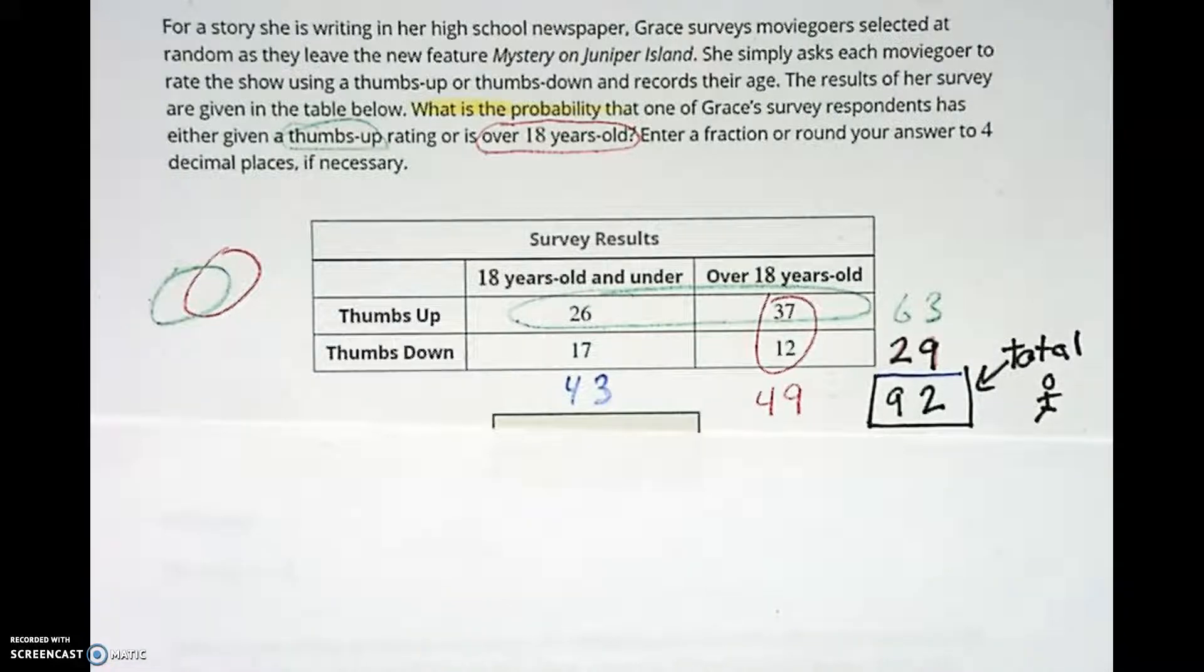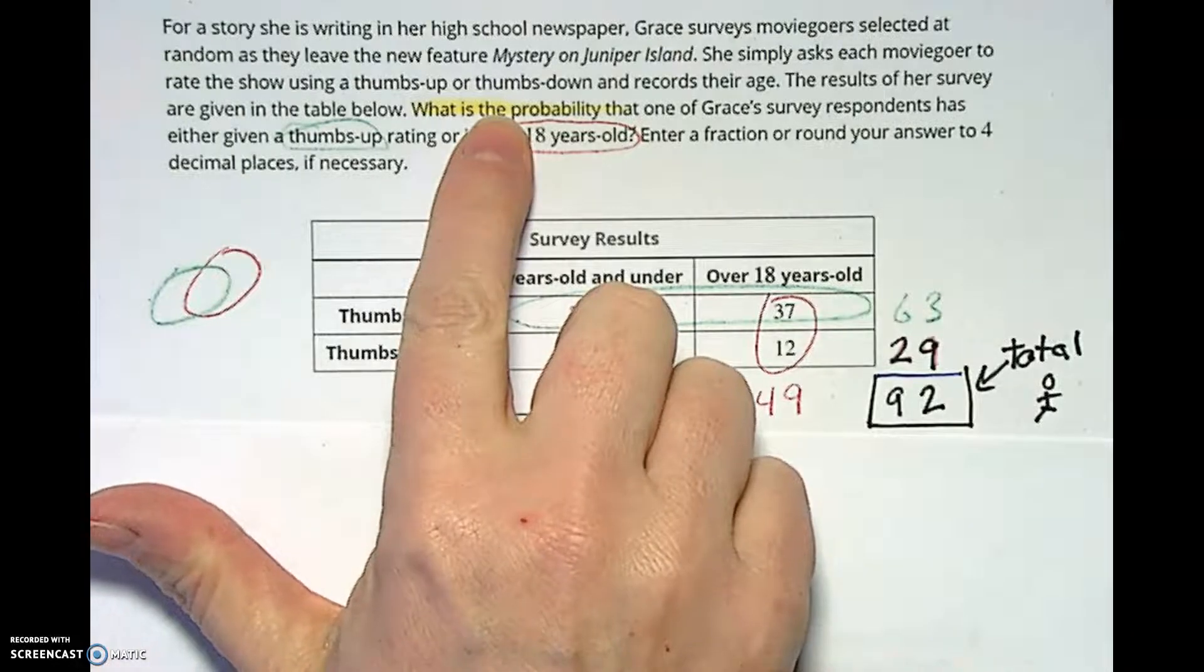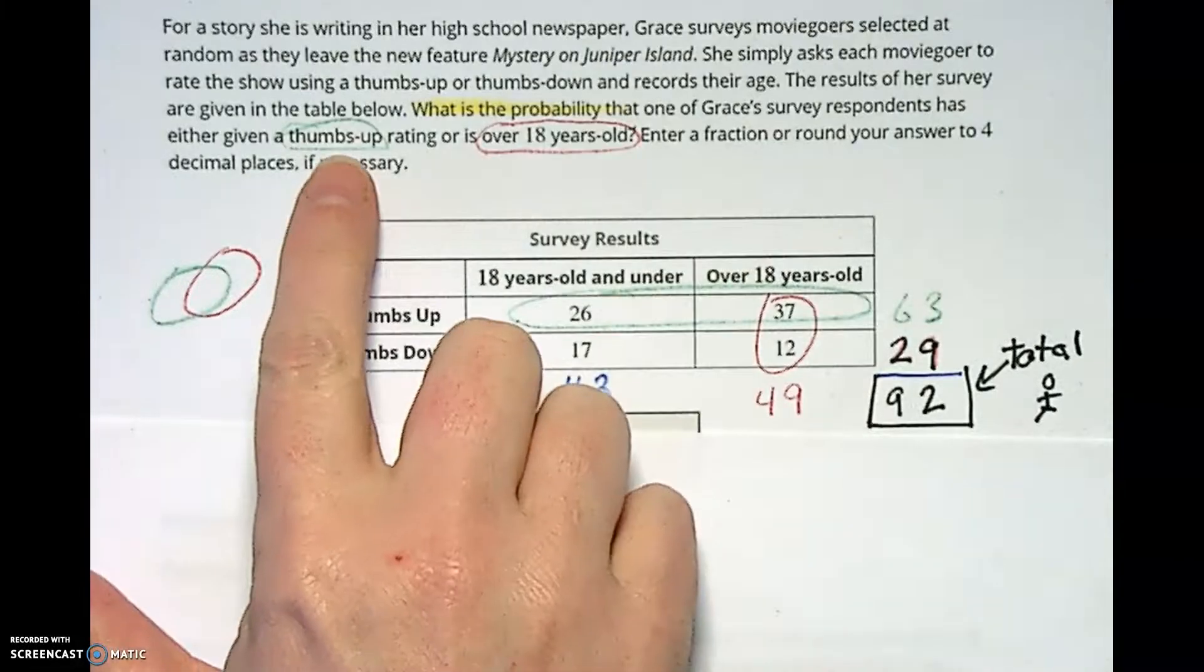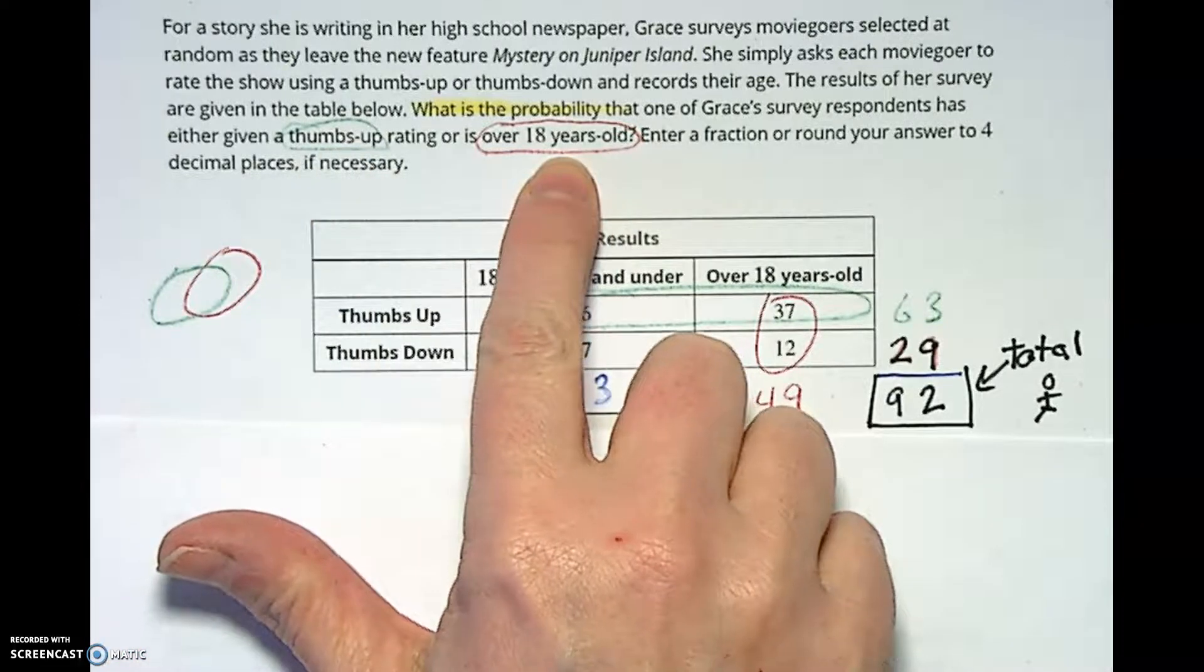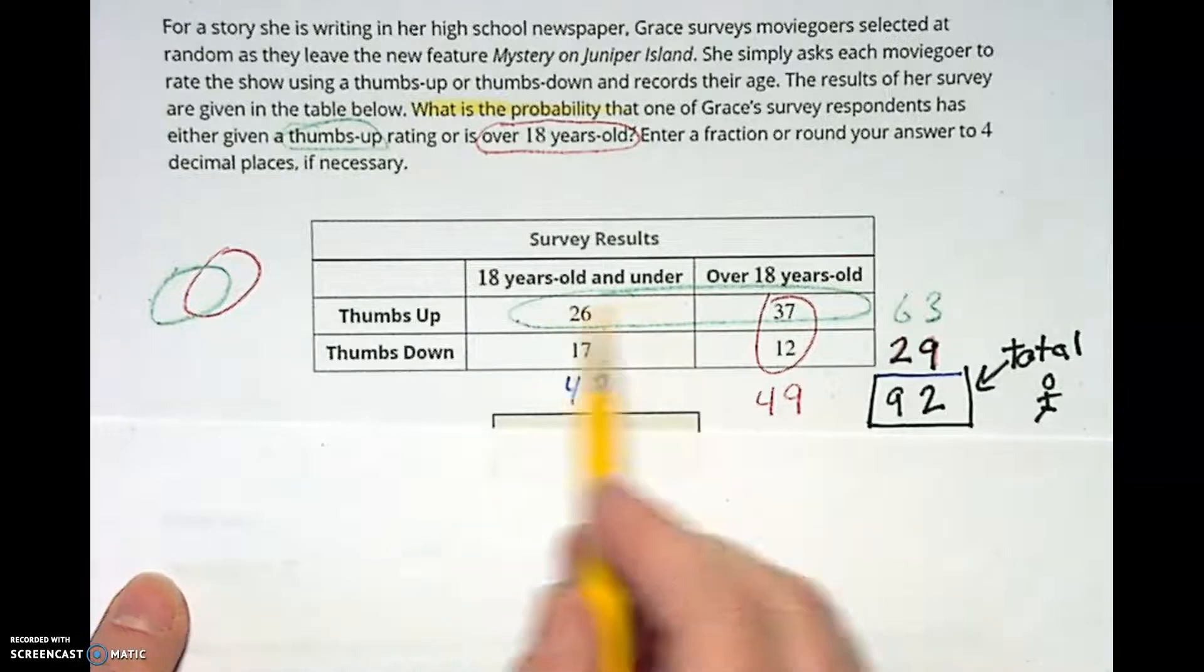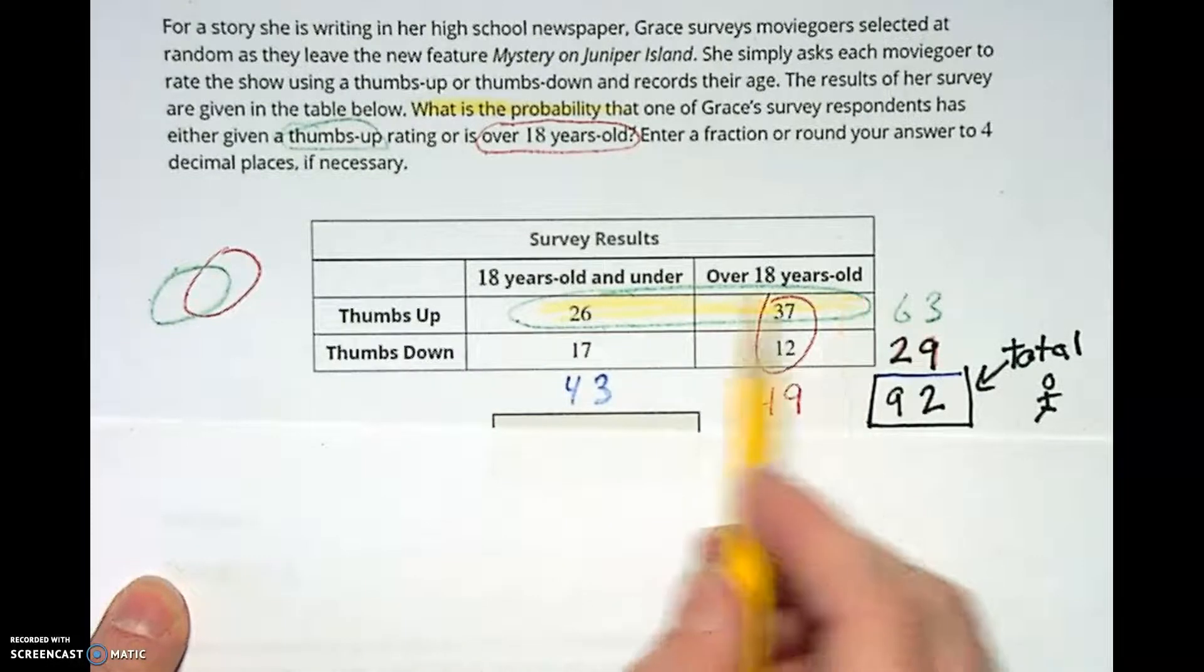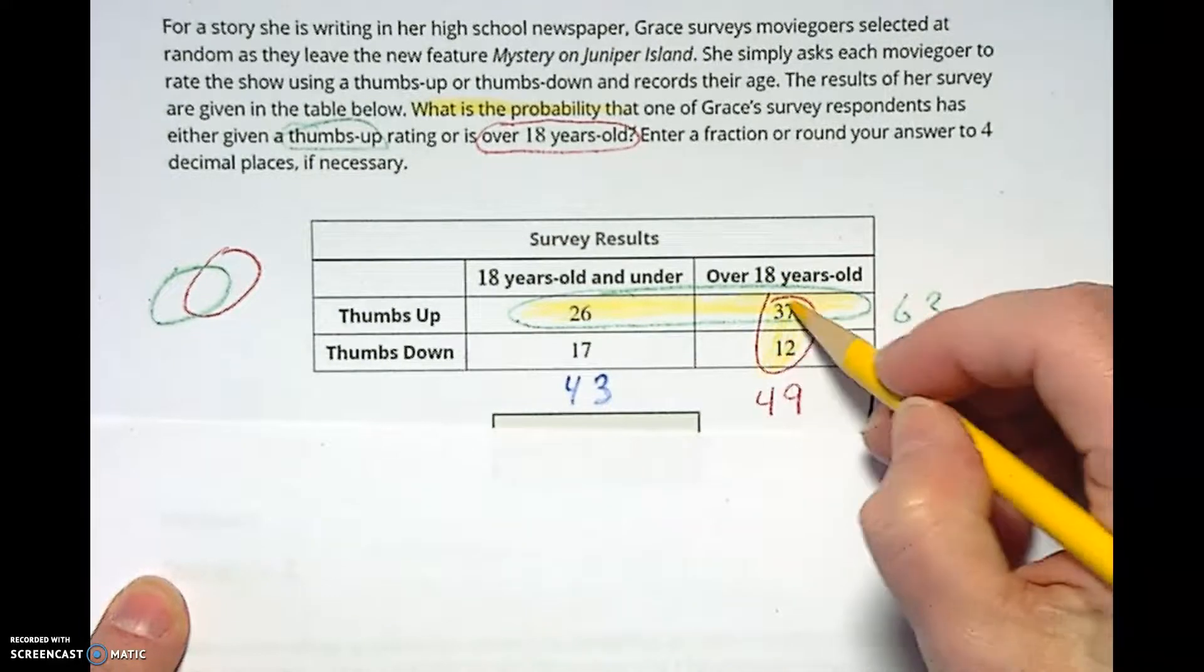All right, now I've gotten a little bit off track and I need to get back to what the question was. The question was, what is the probability that someone in the survey either gave the thumbs up or was over 18 years old? So what that means is we need anybody who gave a thumbs up, this green thing, or was over 18 years old.